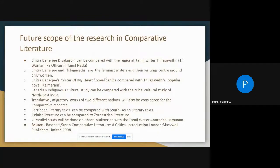Researchers can also pursue their research by comparing Chitra Banerjee Divakaruni with the Tamil writer Tilakavati, or compare her with other feminist Tamil writers. Canadian Indigenous Cultural Study can also be compared with Tribal Cultural Study of Northeastern India. Caribbean literary texts can be compared with South Asian literary texts, and Judaist literature can be compared with Zoroastrian literature. These are some of the future scopes of research in comparative studies.